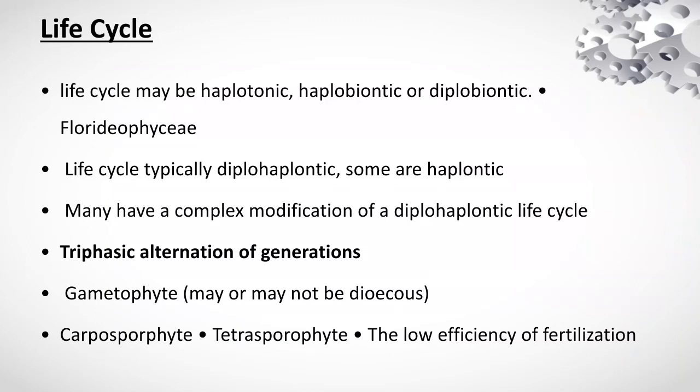Life cycle may be haplontic, haplobiontic, or diplobiontic. Life cycle is typically diplo-haplontic, and some are haplontic. Many have complex modifications of the diplo-haplontic life cycle — a triphasic alternation of generation. Gametophytes may or may not be dioecious. The stages include carposporophyte and tetrasporophyte, with low efficiency of fertilization.